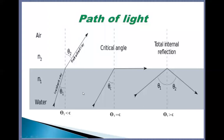As we increase the angle of incidence — step two — the angle of refraction will also increase. A point will come when the angle of refraction becomes 90 degrees; this angle of incidence is known as the critical angle. In the last step, if we increase the angle beyond the critical angle, the light no longer passes into the air — it returns to the water medium. Reflection occurs instead of refraction, and the light is totally internally reflected in the same medium. This phenomenon is known as total internal reflection.